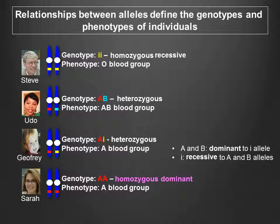An important point to note is that dominance and recessiveness are not intrinsic properties of alleles. Rather, whether an allele behaves as dominant or recessive is dependent on the allele it is paired with. For example, the A and B alleles are each dominant when paired with the I allele; however, when paired with each other, they are said to be co-dominant. We will explore this type of allele relationship in a later video. Continue with this video to test your understanding of genetics terminologies.